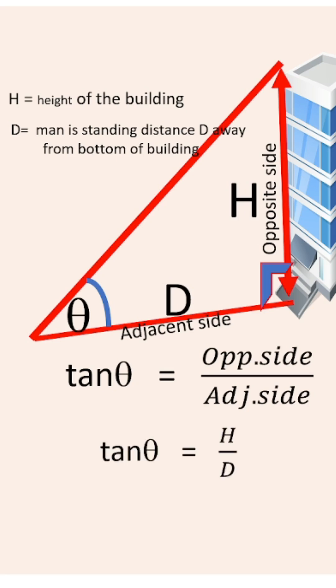Therefore, tan θ equals H upon D. Therefore, height of the building H equals D multiplied by tan θ. By using this formula, we can find out the height of the building.